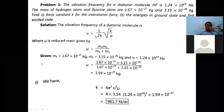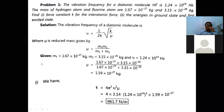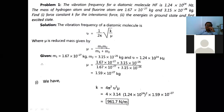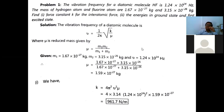Using the equation ν = (1/2π)√(k/μ) and squaring both sides, we get k = 4π²ν²μ. Substituting all values, we get k = 961.7 N/m. The unit of the force constant k is Newton per meter.